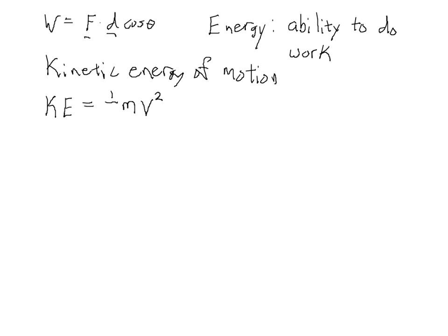And then finally, there's a factor of one half that can be determined either from a derivation that I won't go through or from experiment. If you figure out exactly how much work a moving object can do, you realize that you need this factor of one half in there to make the numbers come out.